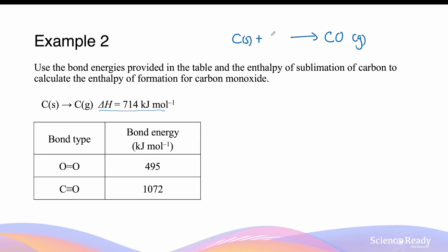To write the reactants, we write carbon in its standard state — which is solid — followed by oxygen in its standard state, which is O2 gas. To balance, we multiply carbon monoxide by 2 and carbon by 2 to balance the number of carbon atoms. The enthalpy change of this reaction is the enthalpy of formation, which is what we are trying to find.